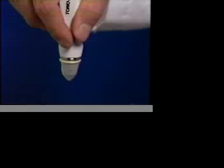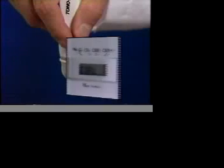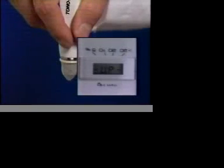The unit beeps twice, and the letters C-A-L for calibration appear on the display. Within a few seconds, the TonoPen will beep again, and the word UP will appear on the display.